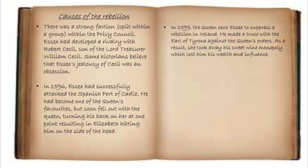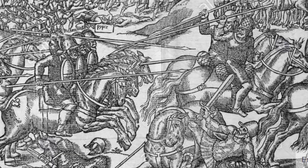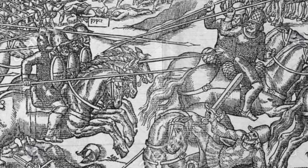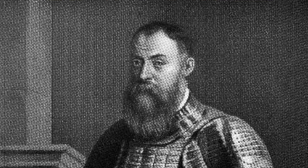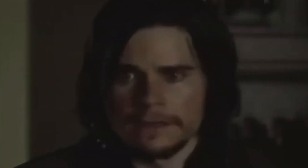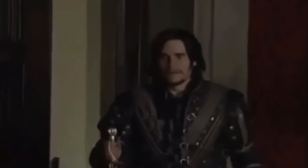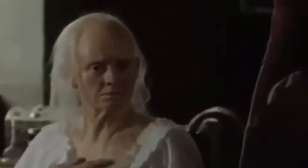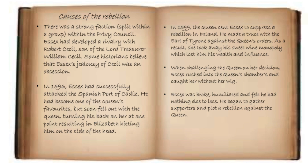In 1599, the Queen sent Essex to suppress a rebellion in Ireland. He made a truce with the Earl of Tyrone against the Queen's orders. As a result, she took away his sweet wine monopoly, which lost him his wealth and influence. When challenging the Queen on her decision, Essex rushed into the Queen's chambers and caught her without her wig. Essex was broke, humiliated, and felt he had nothing else to lose. He began to gather his supporters and plot a rebellion against the Queen.